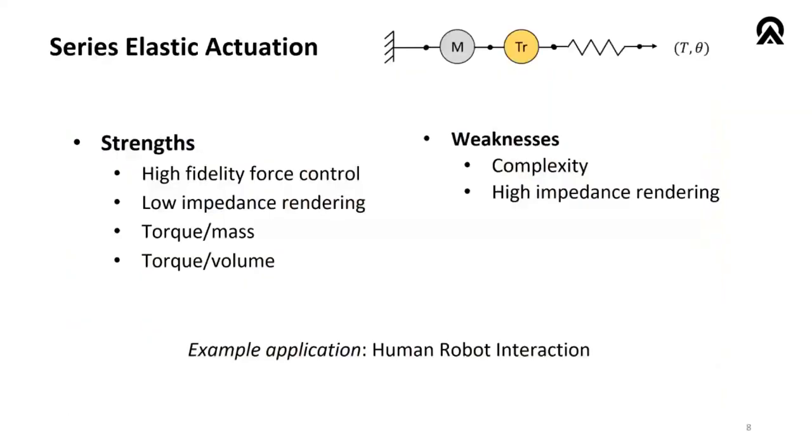So series elastic actuation as an architecture has some strengths and weaknesses, just as any other actuation approach does. High fidelity force control is possible as is low impedance rendering. We can get pretty high torque to mass ratios and torque to volume due to the ability to use fairly large gear ratios. Weaknesses are additional sensors and springs that need to be added into actuators. And there is a mechanical low pass filter. So this makes high impedance rendering or high bandwidth position tracking a bit challenging. Example applications are human robot interaction scenarios as we've touched on here.